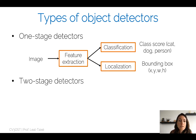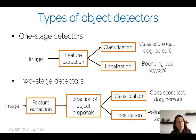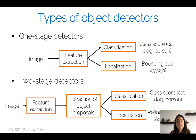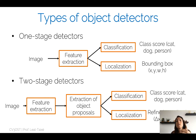In the one-stage detectors, we go directly from image to feature extraction, usually using a convolutional neural network, and then directly towards classification of class scores and localization through bounding box coordinates. The two-stage detectors, on the other hand, divide the whole process into two steps: first they extract a series of regions of interest called object proposals, and then classification and localization happens only on these proposals. As we will see, the two-stage detectors are very powerful and lead to really high accuracy.